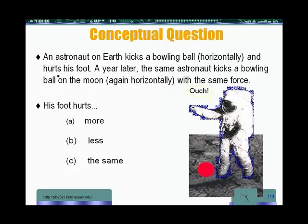This is an interesting example. Now, we have an astronaut on Earth. He kicks a bowling ball horizontally and hurts his foot. A year later, the same astronaut kicks a bowling ball on the moon, again horizontally, with the same force. Is his foot going to hurt more, less, or the same?